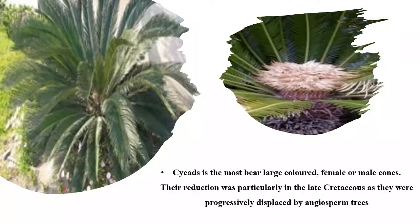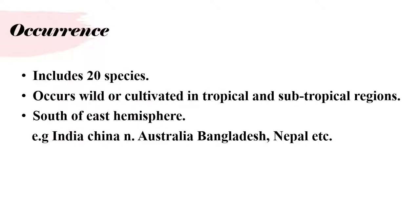Cycadales is notable for large colored female or male cones. Their reduction was particularly evident in the late Cretaceous as they were progressively displaced by angiosperm trees. Occurrence: includes about 20 species. They occur as wild or cultivated plants in tropical and subtropical regions of the southern and eastern hemisphere, for example India, China, Australia, Bangladesh, Nepal, etc.